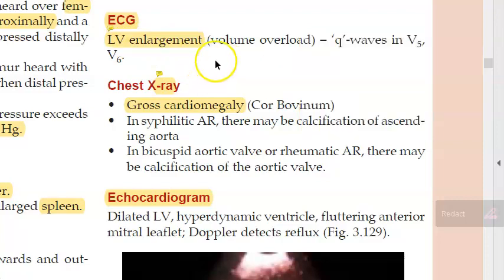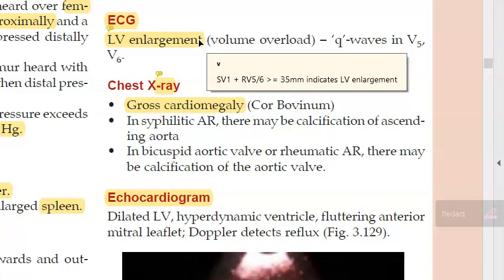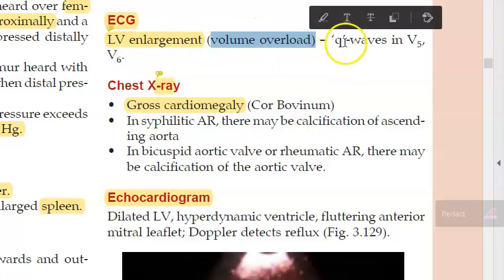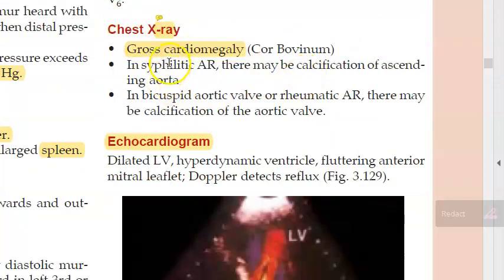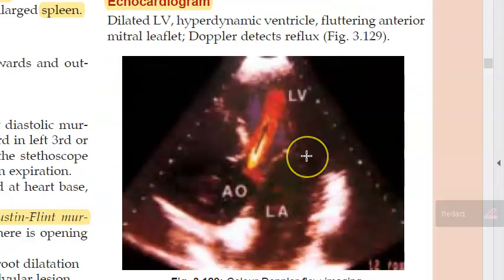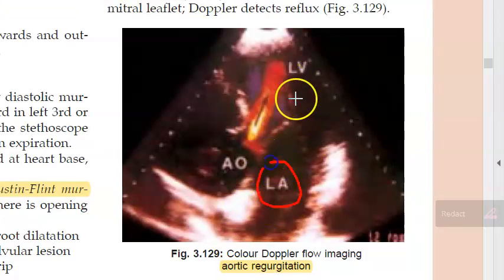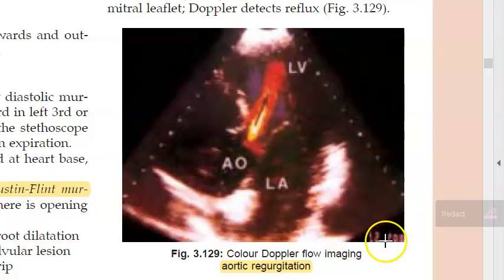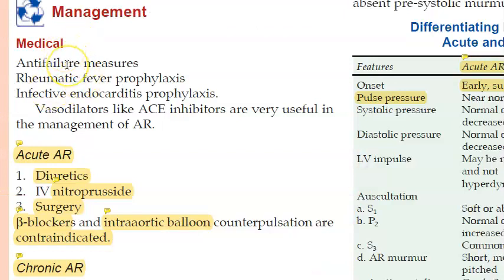On ECG, you will see left ventricular enlargement — a very deep S in V1 and a very tall R in V5 or V6, indicating volume overload and left ventricular enlargement. On X-ray, you will see inferolateral displacement of the apex due to left ventricular hypertrophy. On echocardiography with color Doppler flow imaging, you can visualize blood flowing back from the aorta into the left ventricle.